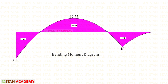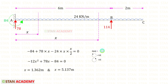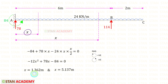We make sections at those two points at a distance x from point A. Using the right-hand side rule the moment equals zero, giving us an equation. Solving with a calculator, we find the two values of x: x equals 1.362 and x equals 5.137. Now we are going to end this session. Thank you for watching this video.